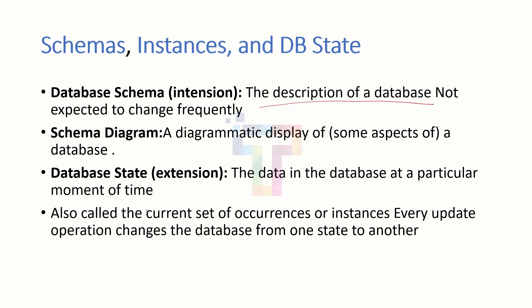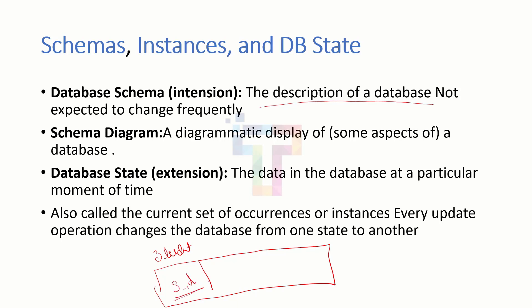A diagrammatic display of a database is called a schema diagram. Whatever database schema we have — the description of a table — we represent it in the form of diagrams, and it is called a database schema diagram. For example, in student table: student ID should be unique so it is the primary key. We will discuss what is primary key, foreign key, and all these things in coming classes. Student name, student phone number — so this is a schema. A diagrammatic representation of some aspects of a database is called a schema diagram.